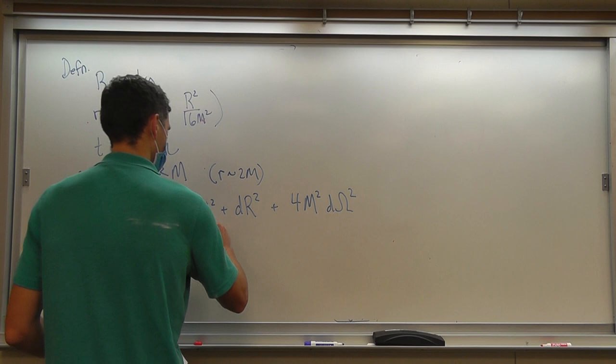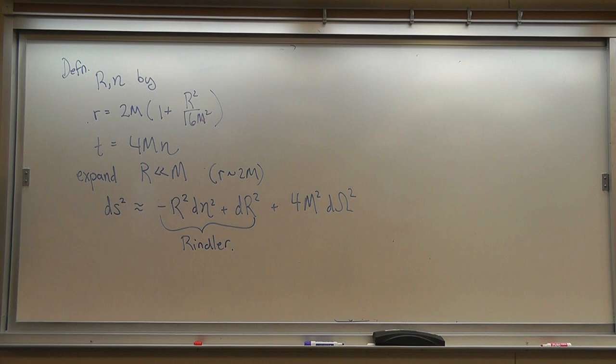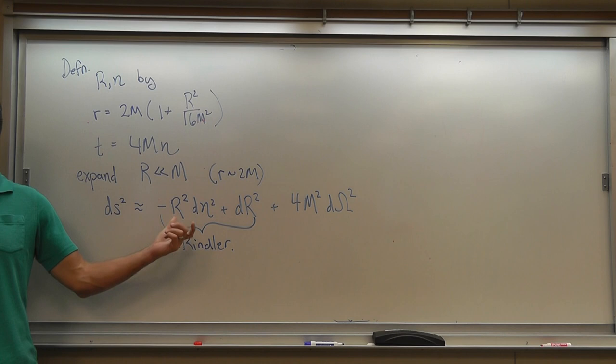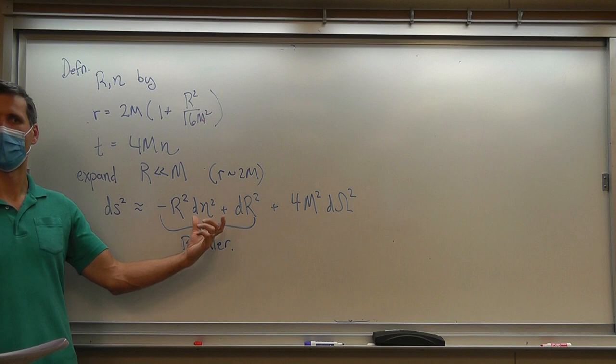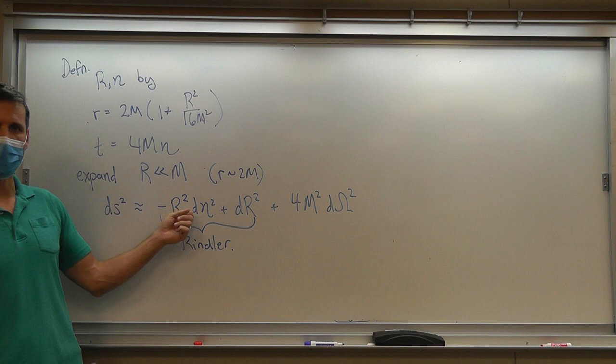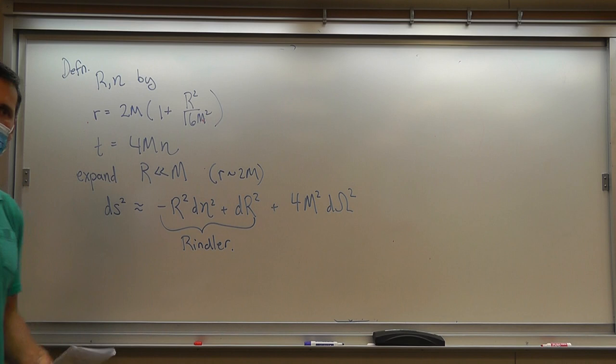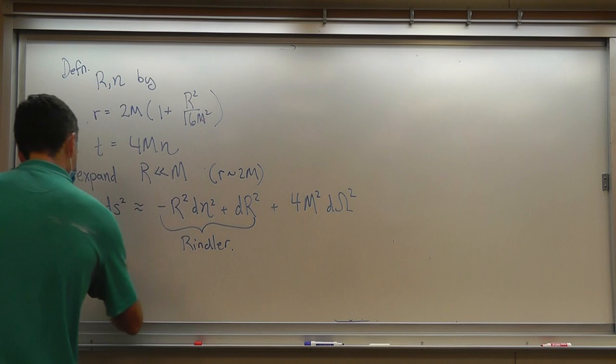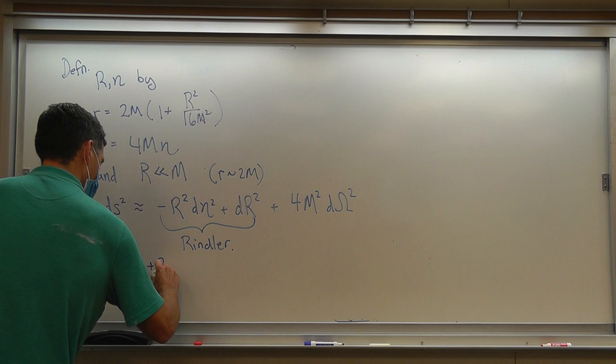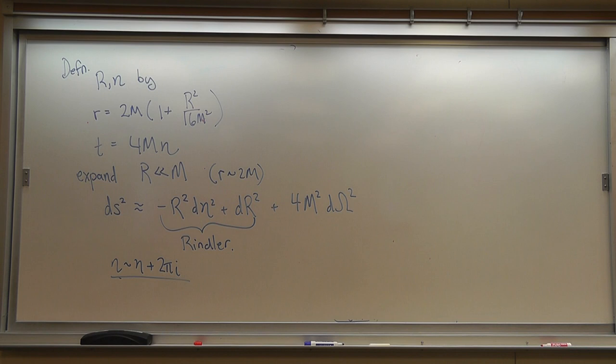The change of variables was chosen so this looks like Rindler space in the coordinates we used last time. In Rindler space, when we go to Euclidean signature, these become polar coordinates, and if we want this to be smooth with no conical defect at the origin, we have to identify eta in imaginary time: eta equals eta plus 2 pi i. That's the statement that the Euclidean manifold is smooth at R equals 0, which on the Penrose diagram is the bifurcation point at the very center.